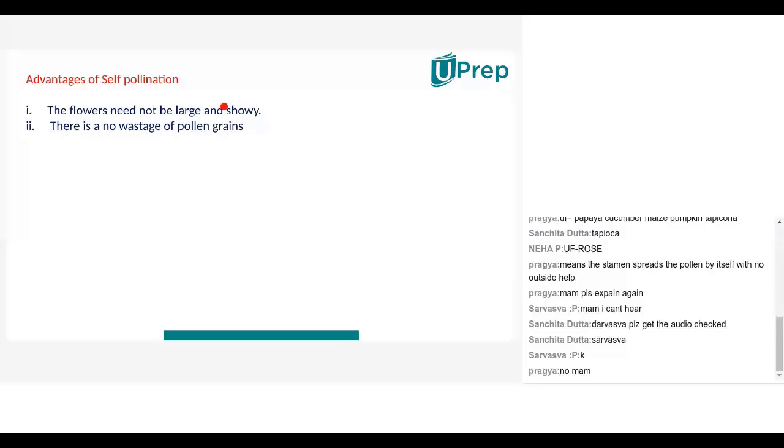What are the advantages? There are disadvantages and advantages. So what are the advantages of self-pollination? The advantages of self-pollination is that no pollen grains are wasted.